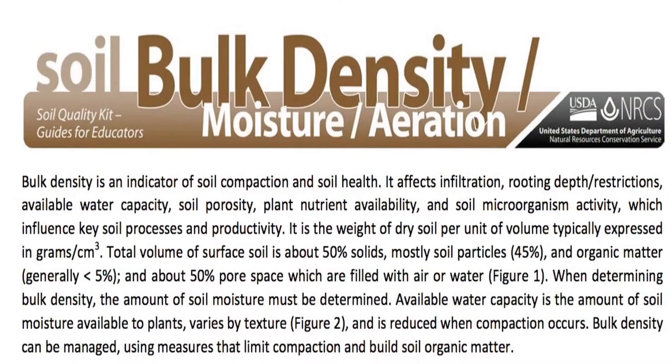Bulk density is an indicator of soil compaction and soil health overall. It's simply a measure of the weight per unit volume. We're going to be using this aluminum cylinder to determine the amount of weight of soil and organic matter per unit volume.